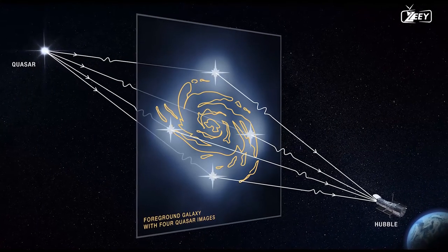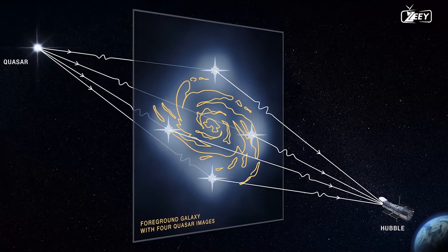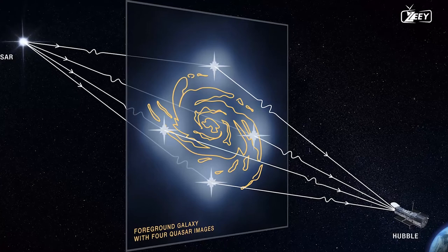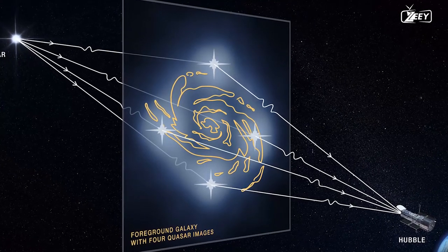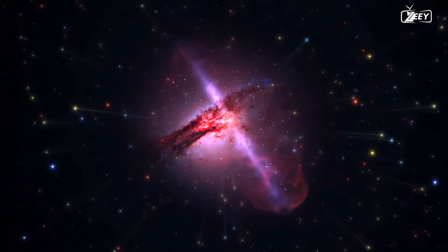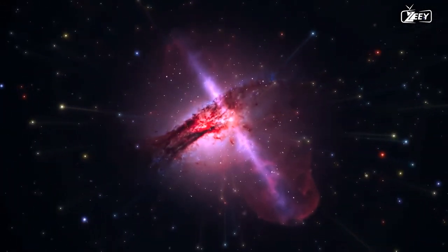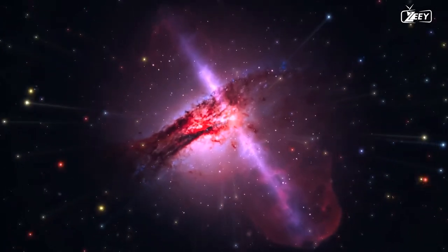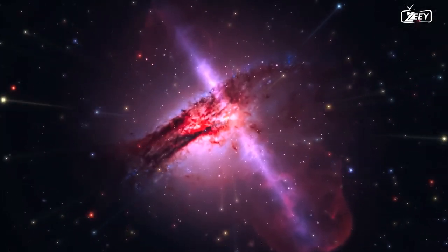When light from far off, brilliant objects bends around a large object like a galaxy or galaxy cluster that is situated between the emitting and receiving object, gravitational lensing results. In other words, gravitational lensing intensifies the light from far off objects, allowing us to see very far off objects even though they are very far away.